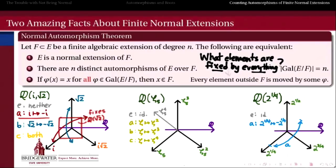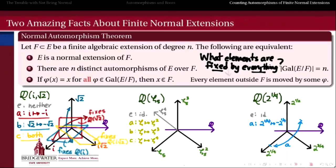Likewise, automorphism B, which trades the sign on the square root of 2, fixes everything that doesn't have a √2 in it — so it fixes Q(i). And if we flip the signs on both i and √2, then anything which does not have an i or a √2 in it (but could have an i√2 term) will remain fixed, because flipping the sign on both i and √2 causes the sign on i√2 to flip twice — i.e., not flip at all.